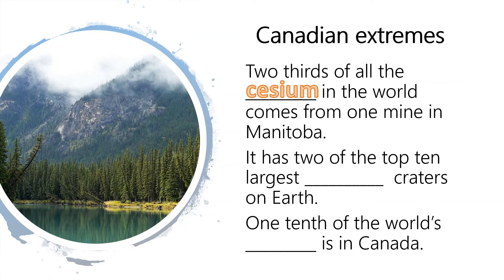The largest application of cesium has been for drilling fluids, but it has a range of applications in the production of electricity, in electronics, and in chemistry. Canada has two of the top ten largest impact craters on Earth. An impact crater is formed when an object like an asteroid or a meteorite crashes into the surface of a larger solid object like a planet or a moon. To form a true impact crater, this object needs to be traveling extremely fast — many thousands of miles per hour.